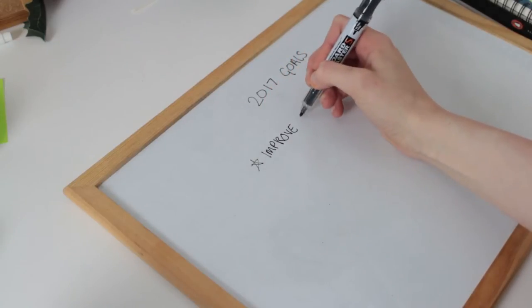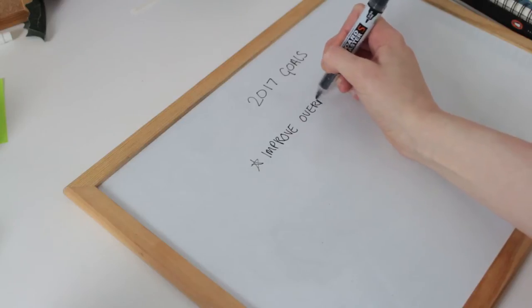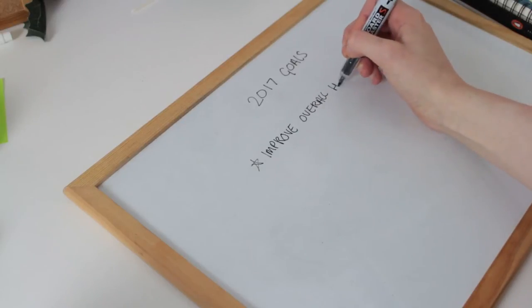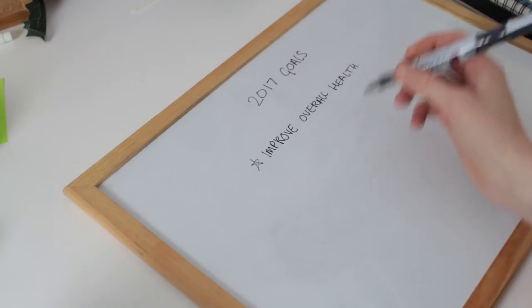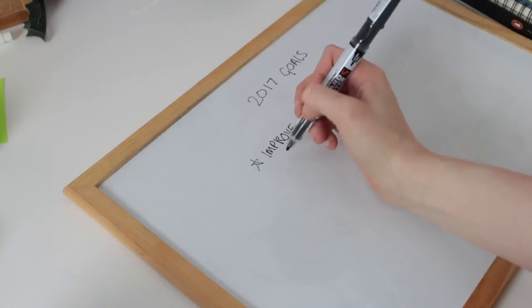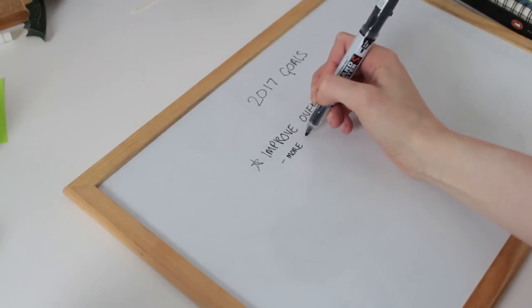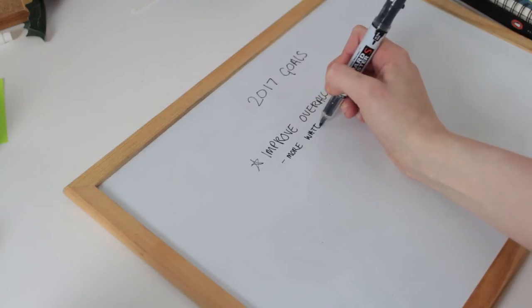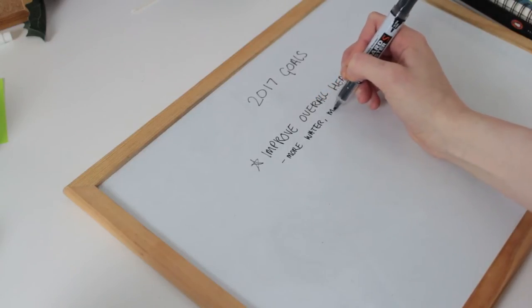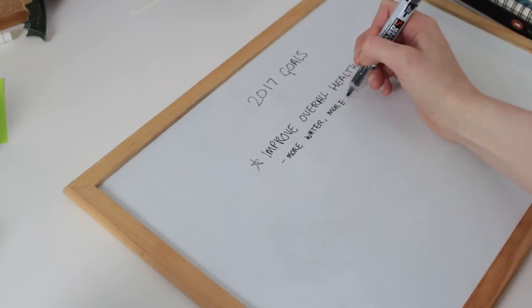The first is one that I think is a really popular goal, which is to improve my overall health, which isn't just eating better or doing more exercise. It's getting better quality sleep, drinking more water and being less stressed. I spent a lot of 2016 really stressed and really on edge and I don't want to be like that this year.